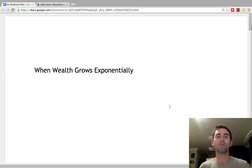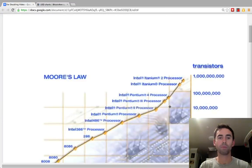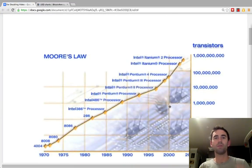This video is about when wealth grows exponentially. What is wealth? Wealth is not money. Money is what allows us to buy wealth. Wealth is things, goods, and services that make us feel rich.